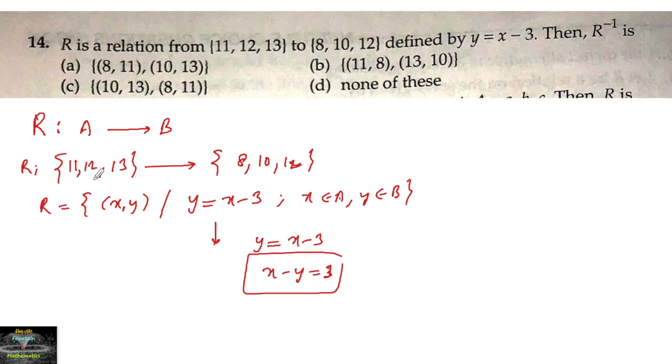If I take from set A, x equals 11, then y must be 11 minus 3, that is 8. So one ordered pair in our relation is (11, 8). If x equals 12, then y equals 12 minus 3 is 9, but 9 does not belong to B, so there is no ordered pair formed.